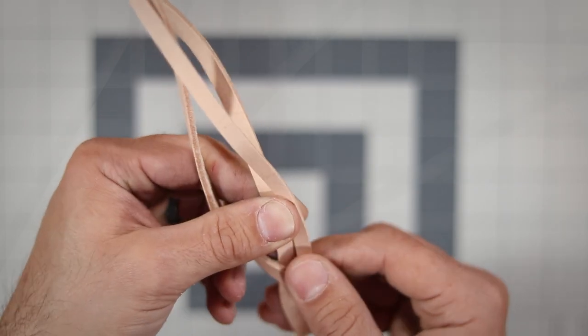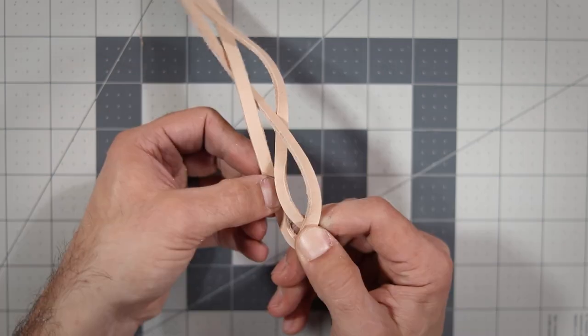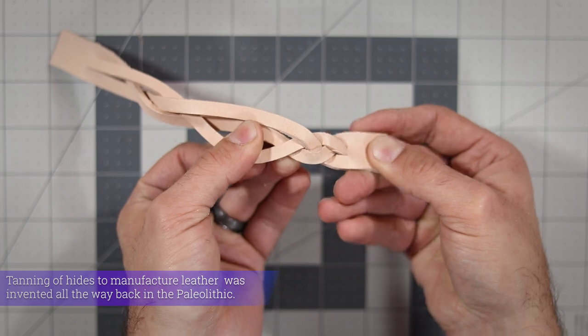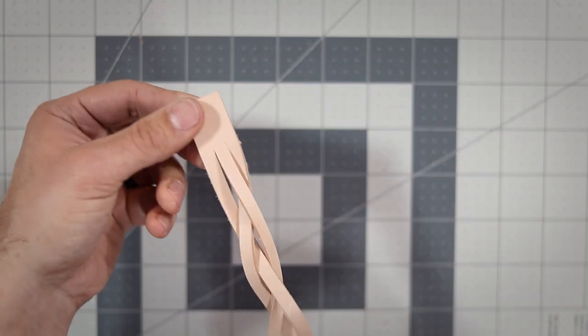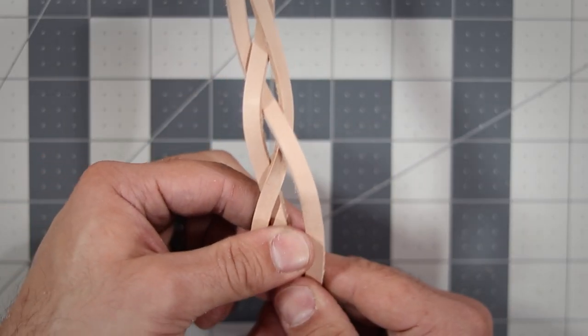Now we're just going to repeat those two steps, passing the right under the center, followed by the left. Now at this point, we've made four passes, and as you can see, it's starting to look like something. But the other end is also getting kind of messy.